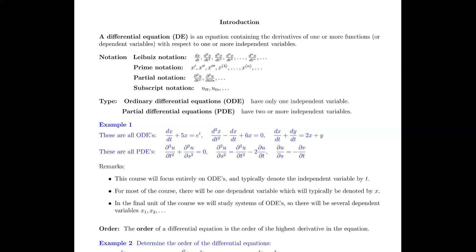In this introduction, we want to define a differential equation, look at some notation used when discussing differential equations, and discuss some defining characteristics. A differential equation, sometimes abbreviated DE, is an equation containing the derivatives of one or more functions, or dependent variables, with respect to one or more independent variables. We can think of a differential equation as just being an equation with a differential or a derivative in it.